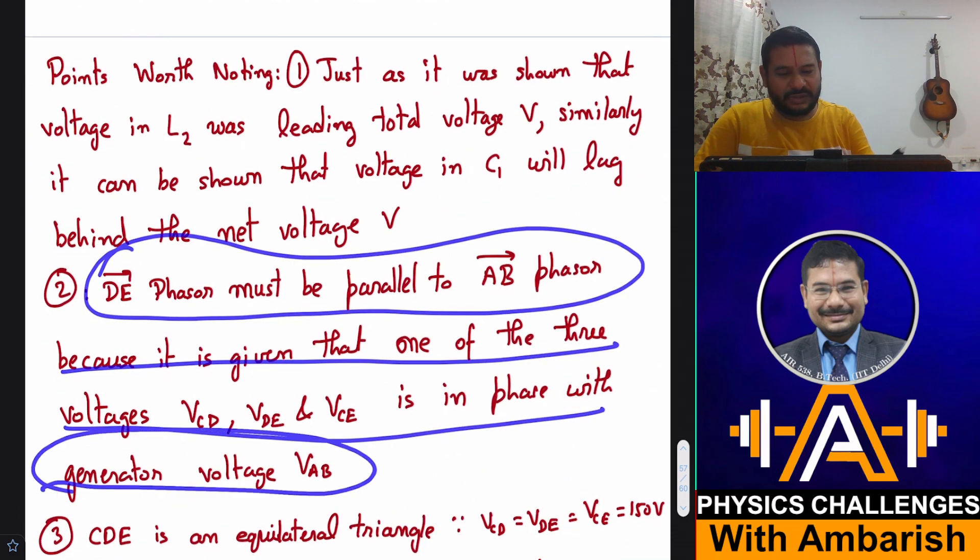This branch is horizontal and then this is an equilateral triangle. Now it's just a matter of geometry to figure out all the voltages. Points worth noting: just as it was shown that voltage in L2 was leading the total voltage, similarly it can be shown that voltage in C1 will lag behind the net voltage. DE phasor must be parallel to the AB phasor because it is given that one of the three voltage phasors is in phase with the generator voltage AB. And third, CD is an equilateral triangle because VCD equals VDE equals VCE equals 150 volt. Now we just need to solve for various phasor lengths geometrically.